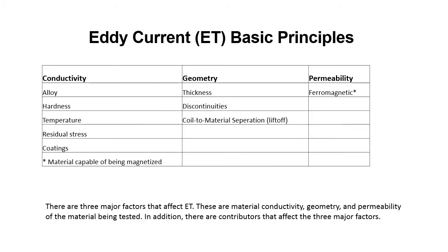There are three major factors that affect Eddy Current Testing. These are material conductivity, geometry, and permeability of the material being tested. In addition, there are contributors that affect the three major factors. Conductivity can be affected by alloy, hardness, temperature, residual stress, and coatings. Geometry: thickness, discontinuities, coil-to-material separation. And then permeability — is it ferromagnetic? These are things that need to be taken into consideration by the Eddy Current Testing Technician.